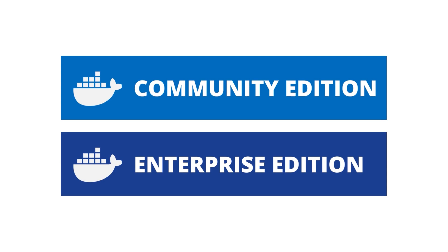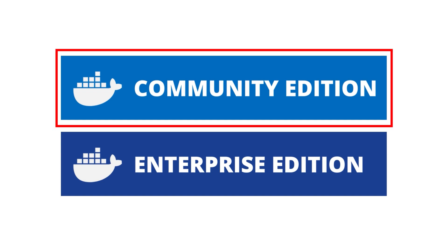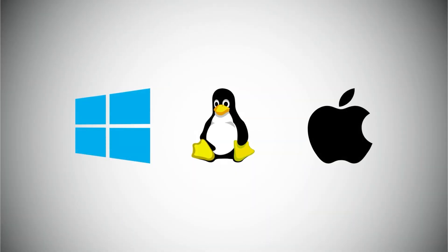Docker has two different editions: Community Edition and Enterprise Edition. The Community Edition is the set of free Docker products, while the Enterprise Edition is the certified and supported container platform. Along with the Enterprise Edition you get add-ons like image security management, and it is a paid platform. We are going with Docker Community Edition.